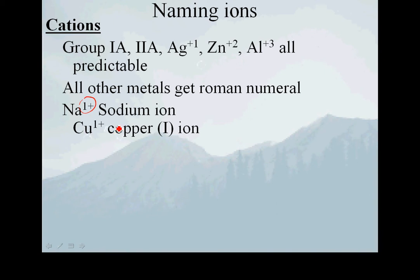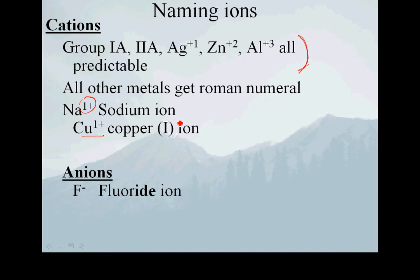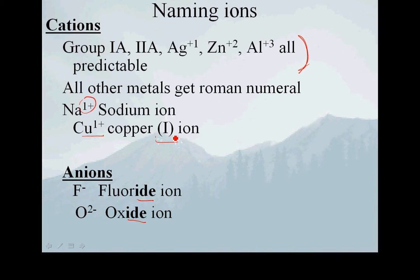But copper, as a plus 1 ion, because it's not one of the ones that's always the same, we have to specify which flavor of copper. If we're talking about a copper plus 1 ion, we say copper(I) ion — that's a roman numeral in parentheses. And anions generally have the ending of the atom name changed to -ide. So fluorine becomes fluoride, and oxygen as a minus 2 anion becomes oxide. Anions end in -ide; cations are the element name followed by the word ion, sometimes with the charge.